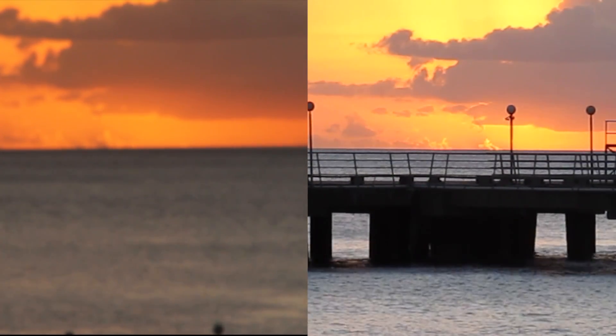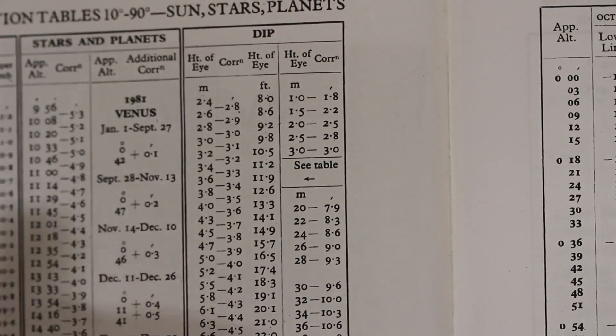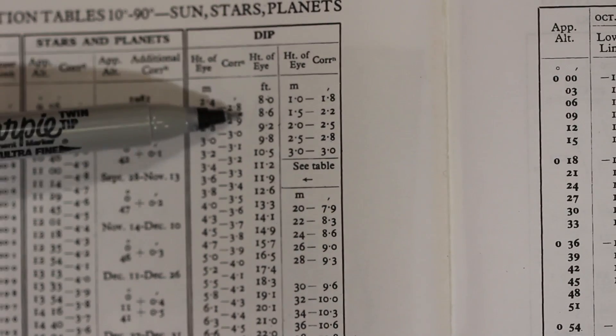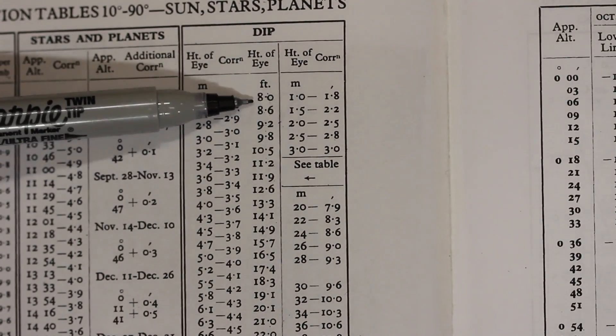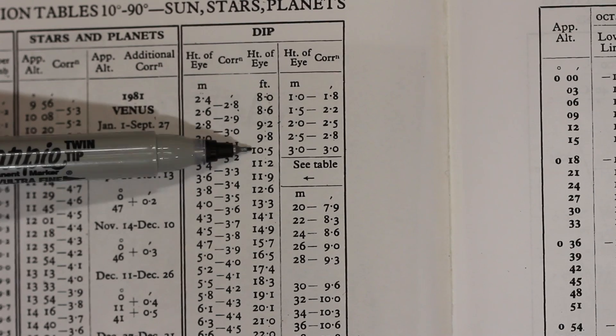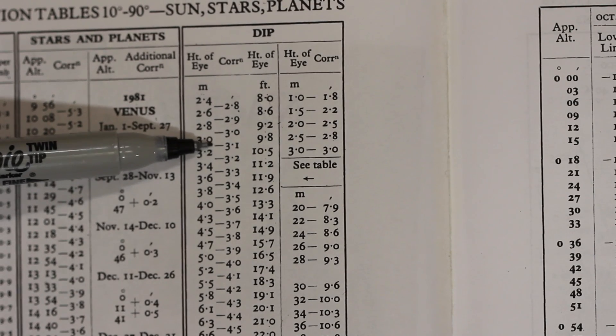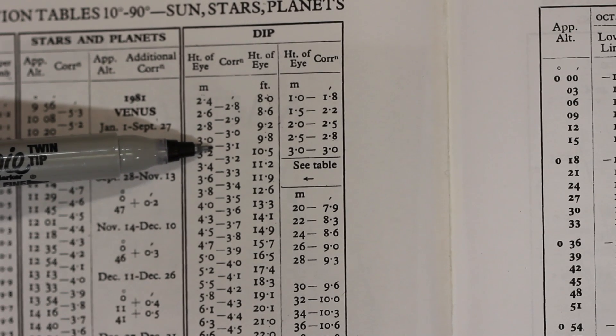Luckily, the nautical almanac has an easy table for this calculation. It's called DIP and it's located inside the front cover. Simply look up your approximate height of eye and then subtract the appropriate value from your observed altitude.